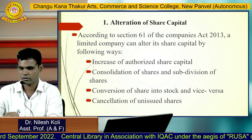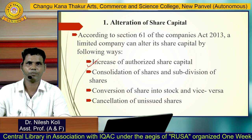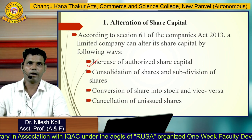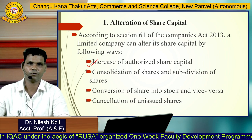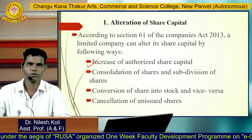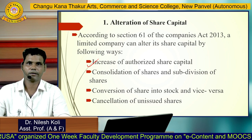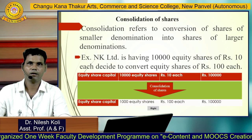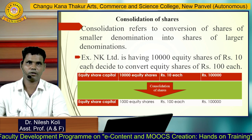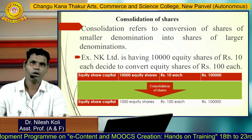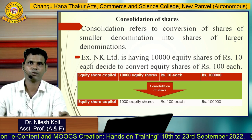The first part is an increase in authorized capital, where the company gets permission and increases its authorized share capital to issue new shares for raising funds. Then there is consolidation of shares and subdivision of shares. Also conversion of shares into stock and vice versa, and cancellation of unissued shares.